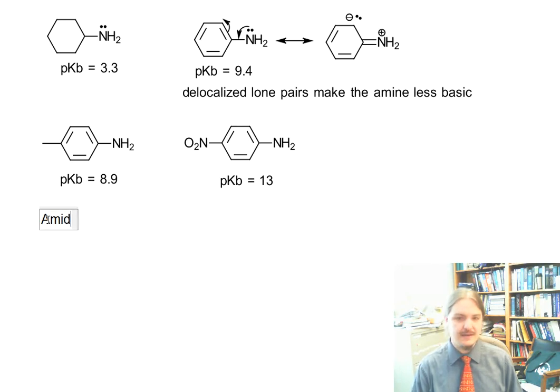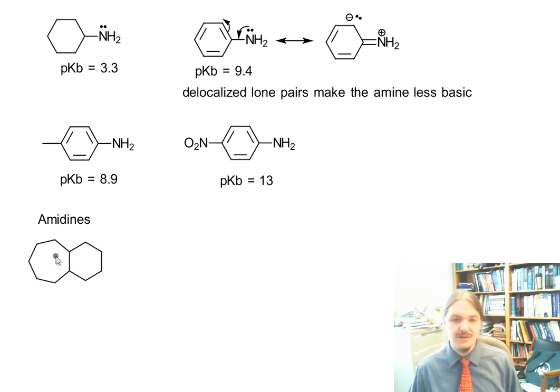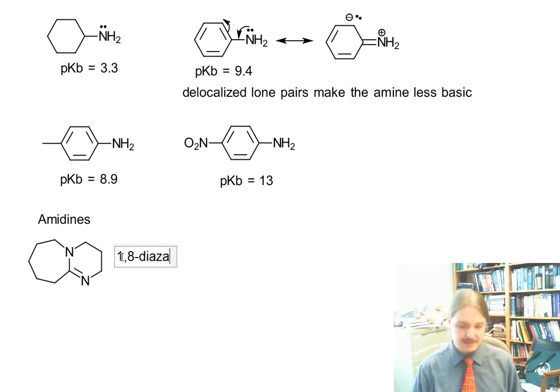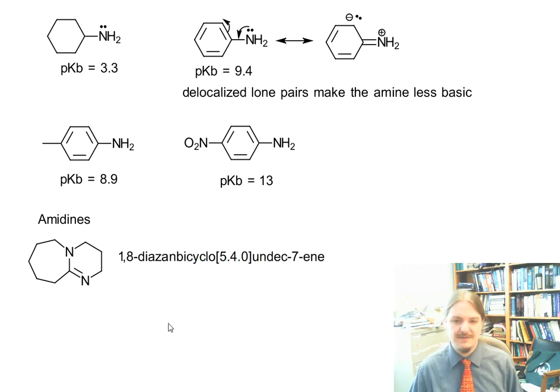Let's talk about another class of molecules, the amidines. I'm just going to use a single representative compound to describe what's going on here. This is the structure of diazabicyclo-5-4-undec-7-ene. Everybody remembers this compound. Actually this is DBU. It's a bicyclononane, and you may have encountered DBU as a base in various organic reactions.